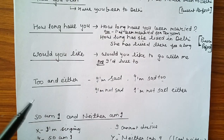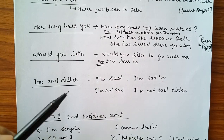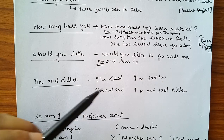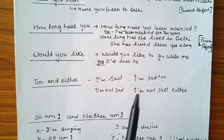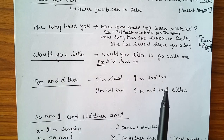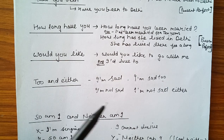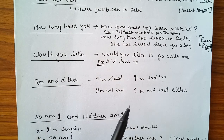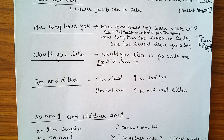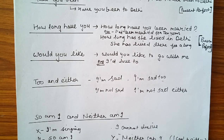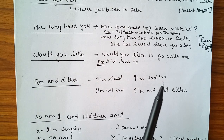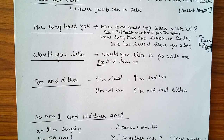Now we look at 'too' and 'either.' If I say 'I am sad,' you agree by saying 'I am sad too.' But if I say 'I am not sad,' you agree by saying 'I am not sad either.' So use 'too' for positive statements and 'either' for negative ones.